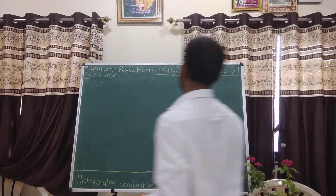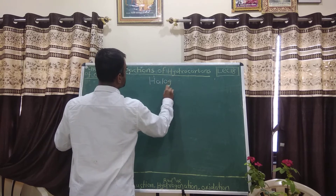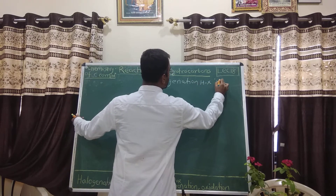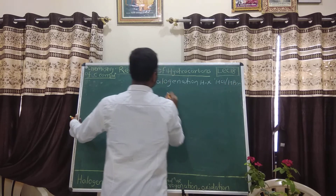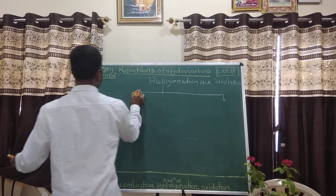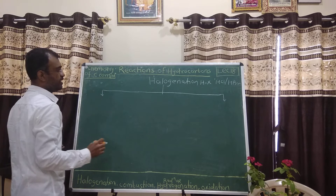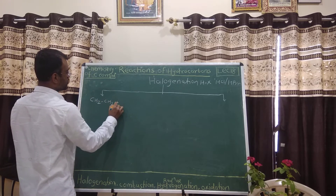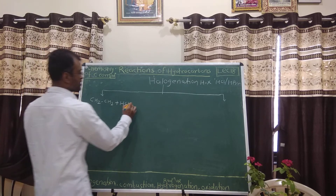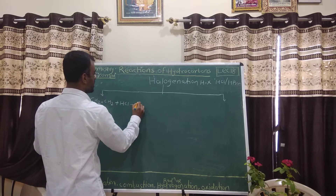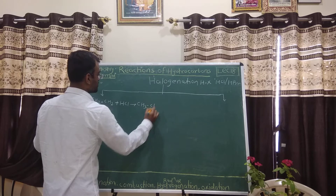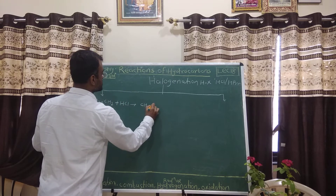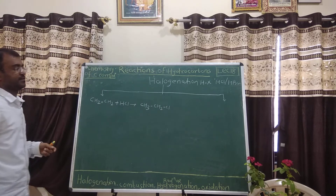Now we will see halogenation using hydrogen halides like HCl or HBr. As far as alkenes are concerned, we do halogenation using HCl or HBr. For example, when we react CH₂=CH₂ with HCl, we get the corresponding saturated alkyl halide, that is CH₃CH₂Cl.